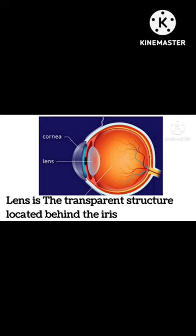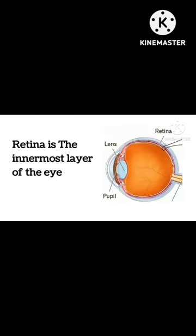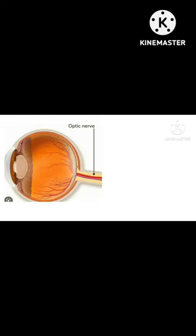The lens allows the eye to focus on objects at varying distances. The retina converts light into electrical impulses that are sent to the brain through the optic nerve. The optic nerve is located in the back of the eye and connects the eye to the brain.